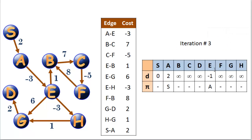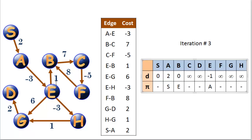Let's look at iteration 3. The only edges that matter are outbound edges from S, A, and E. E has a whole bunch of outbound edges, so this gets interesting — and it's important we relax these in alphabetical order. A to E with negative 3 we've already considered. Then E to B with a cost of 1: we can get to E for negative 1, so adding 1 gives B a cost of 0 with predecessor E. Graphically we can see S to A to E to B: 2 minus 3 is negative 1, plus 1 is 0.